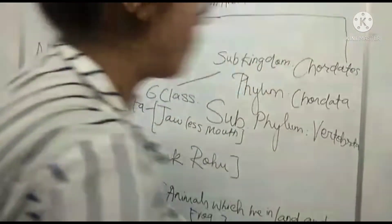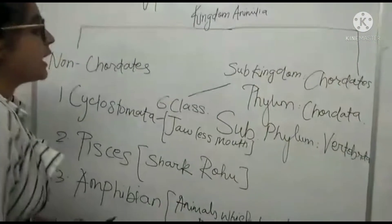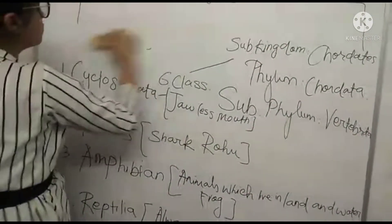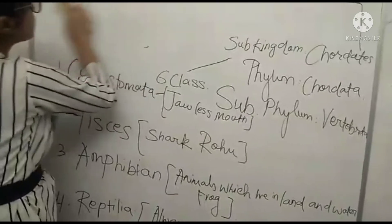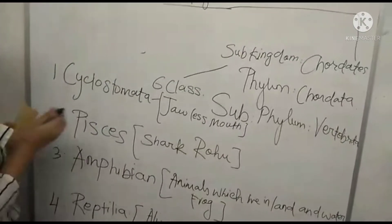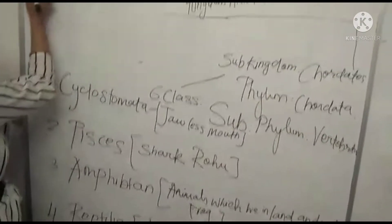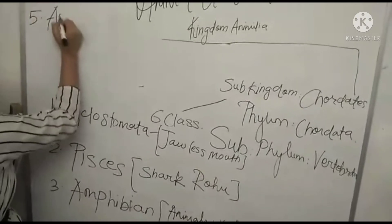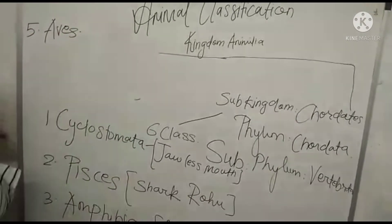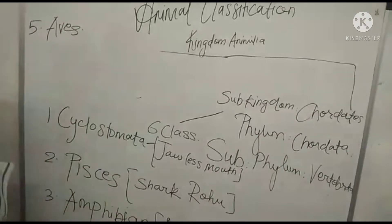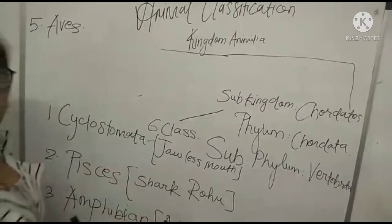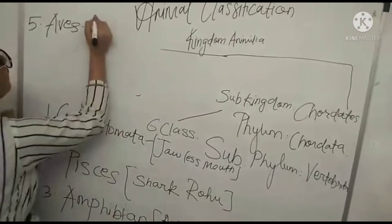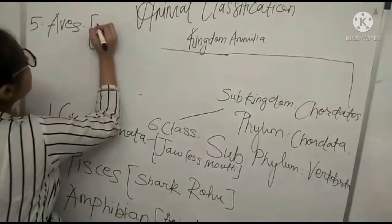Our fifth one is Aves. Aves are birds. All the birds are considered in Aves — I will write here for hint: birds.